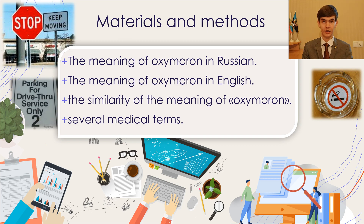In English, an oxymoron is a rhetorical device that uses a contradiction to show a thought or reveal a paradox. An oxymoron can also be a combination of two words in which the meanings of two words collide, being opposite in meaning. Here we can see the similarity of the meaning of oxymoron — the expression in Russian and English are consonant.